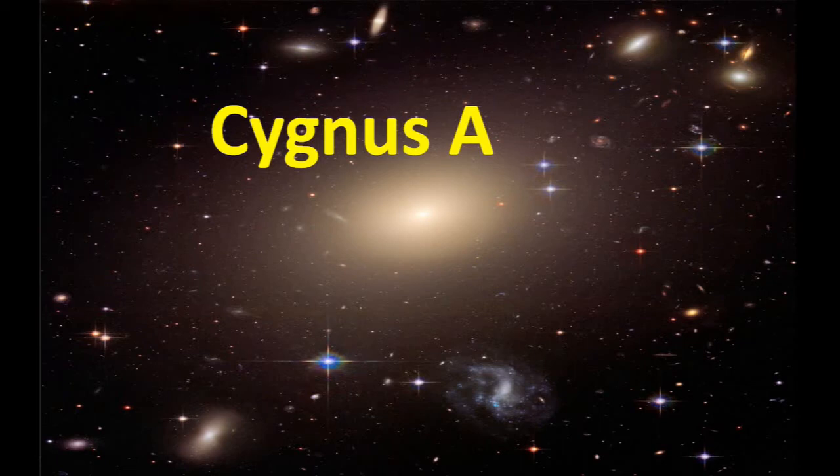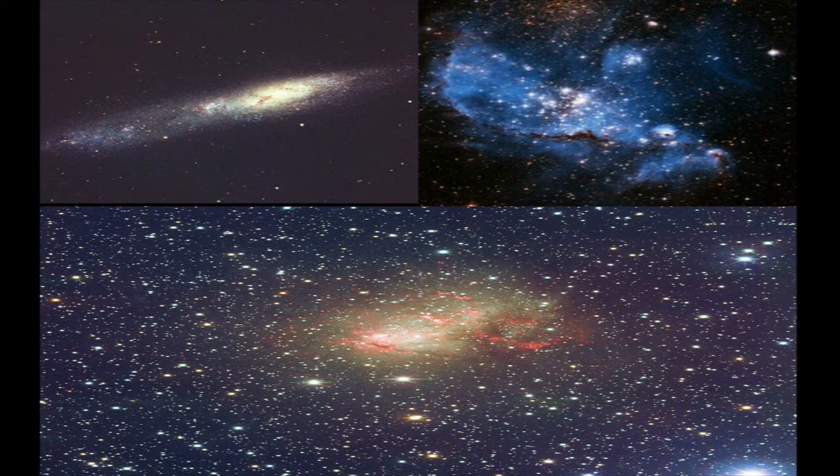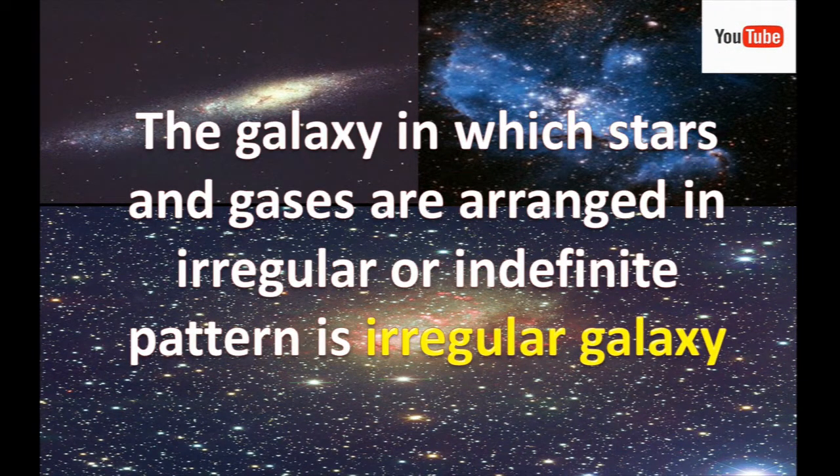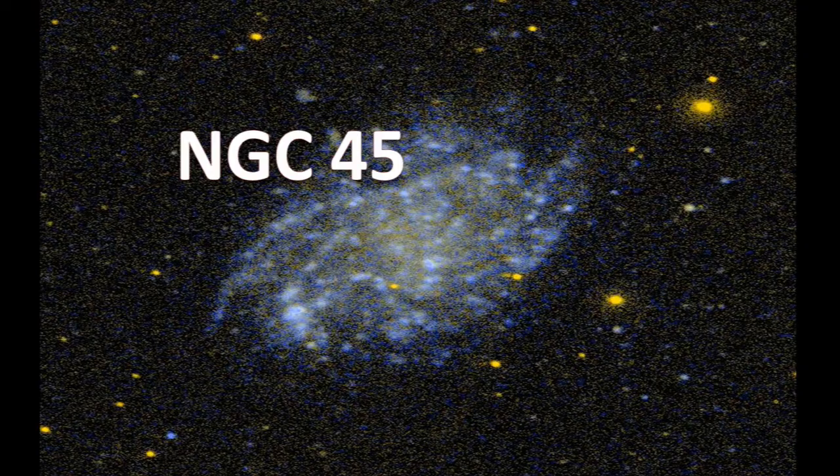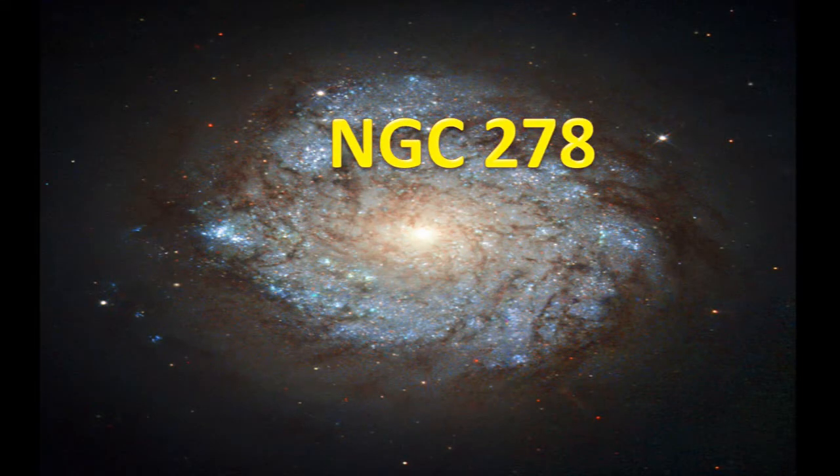Cygnus A. The galaxy in which stars and gases are arranged in irregular or indefinite pattern is called irregular galaxy. NGC 45 is an irregular galaxy. NGC 278 is irregular galaxy.